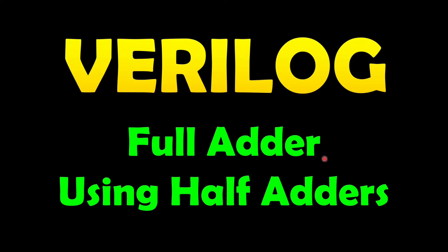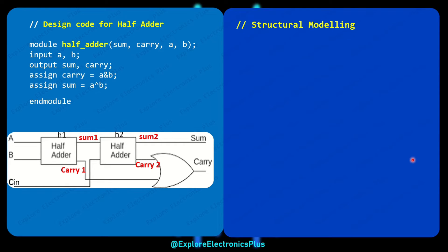Now let's see the full adder design using two half adders. To design a full adder, we require two half adders and one OR gate. The first half adder takes A and B as input and generates an intermediate sum and intermediate carry. The second half adder takes sum1 from the first half adder and C_in as its inputs, generating the final sum and an intermediate carry2. The two carries are fed into the OR gate, which produces the final carry.